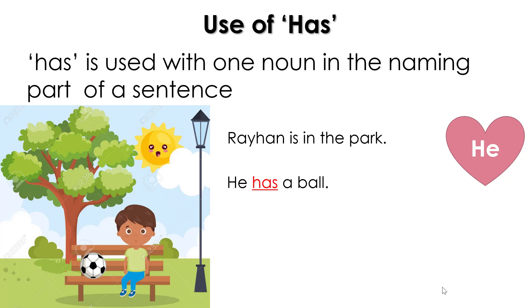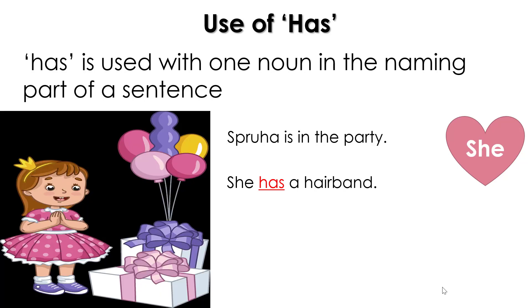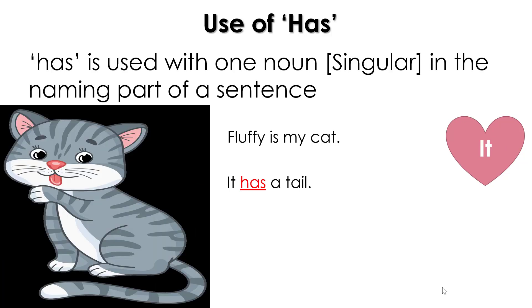Similarly, we are talking about the boy Rehan, so I can also write 'Rehan has a ball' because Rehan is singular. Let's see one more example — 'Spruha is at the party. She has a hairband.' So other than the pronoun 'he,' if we have the pronoun 'she,' we also use 'has.' I can also say 'Spruha has balloons.'